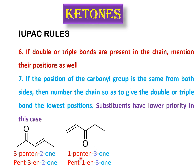Remember: when double or triple bonds are not the parent functional group, you don't write the final 'e'. If the double bond is the parent functional group, as in alkenes, the name ends with '-ene'; if an alkyne is the parent functional group, the name ends with '-yne'. But if ketone has higher priority and is the parent functional group, you don't write the final 'e' with '-en' or '-yn'.